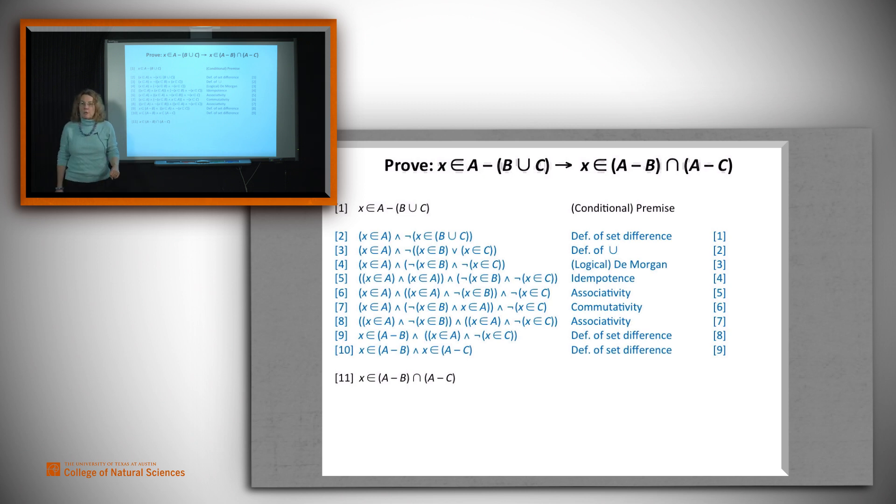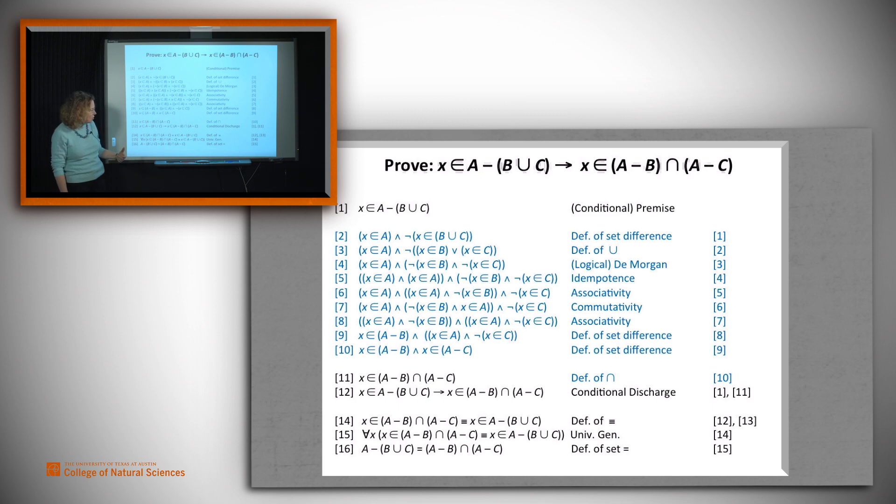All right, now we're looking close. But we've got a logical AND and we need a set intersection. So we use the definition of set intersection. You're in the intersection of two sets just in case you are in fact in both of them. So we filled in that last justification.